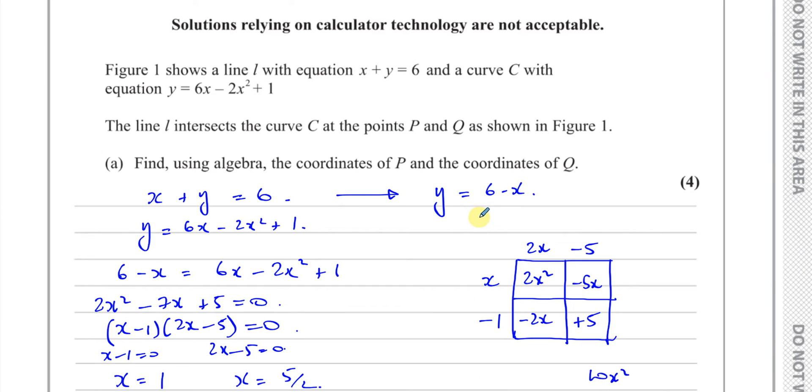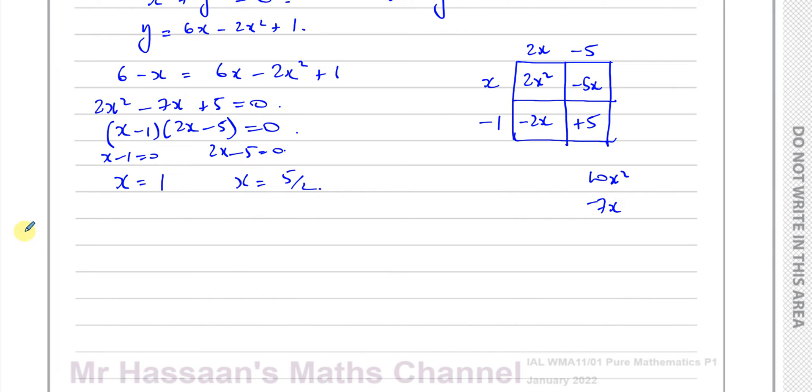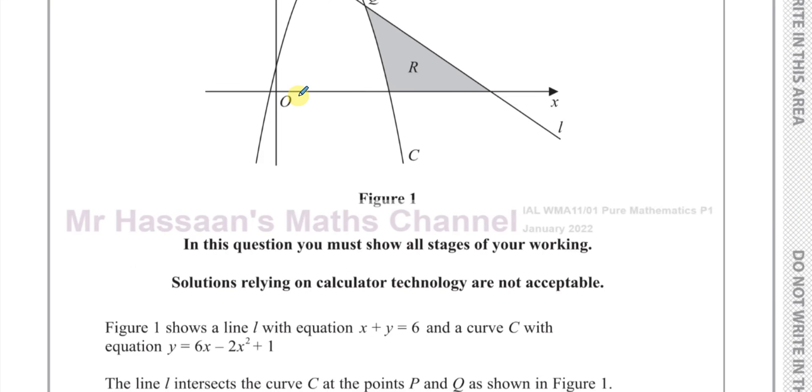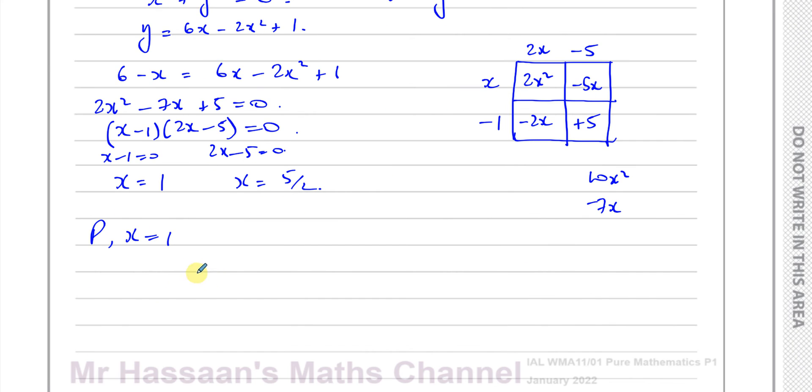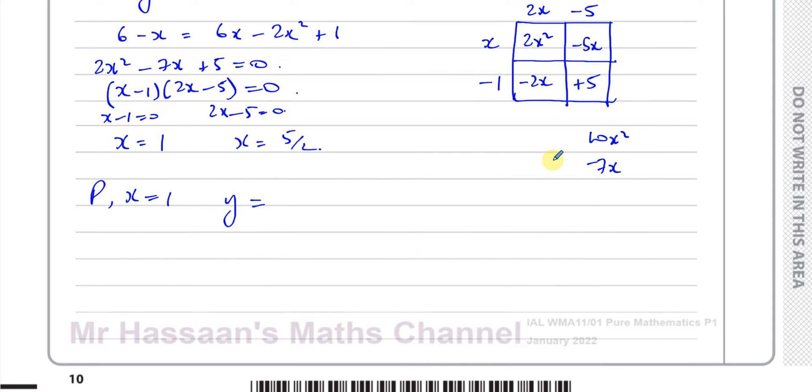Now we've got to find the coordinates of P and Q. For P, we know x = 1 because it's the one to the left. So x = 1, and we know y = 6 - x, therefore y = 5. So the coordinates of P are (1, 5).